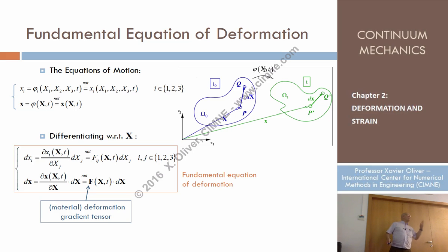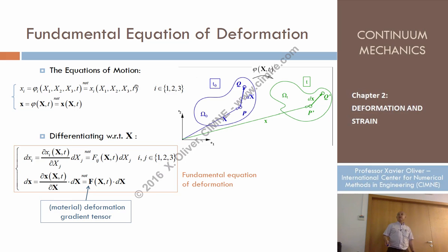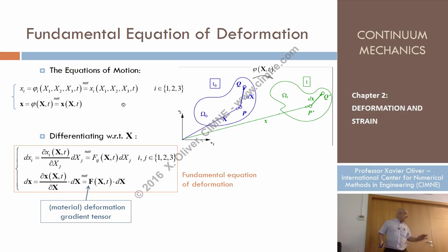Imagine we have the equations of motion — equations that provide the spatial position small x in terms of the material coordinates X1, X2, X3, and time. These are the equations of motion we already know, given in indicial notation and in compact notation.